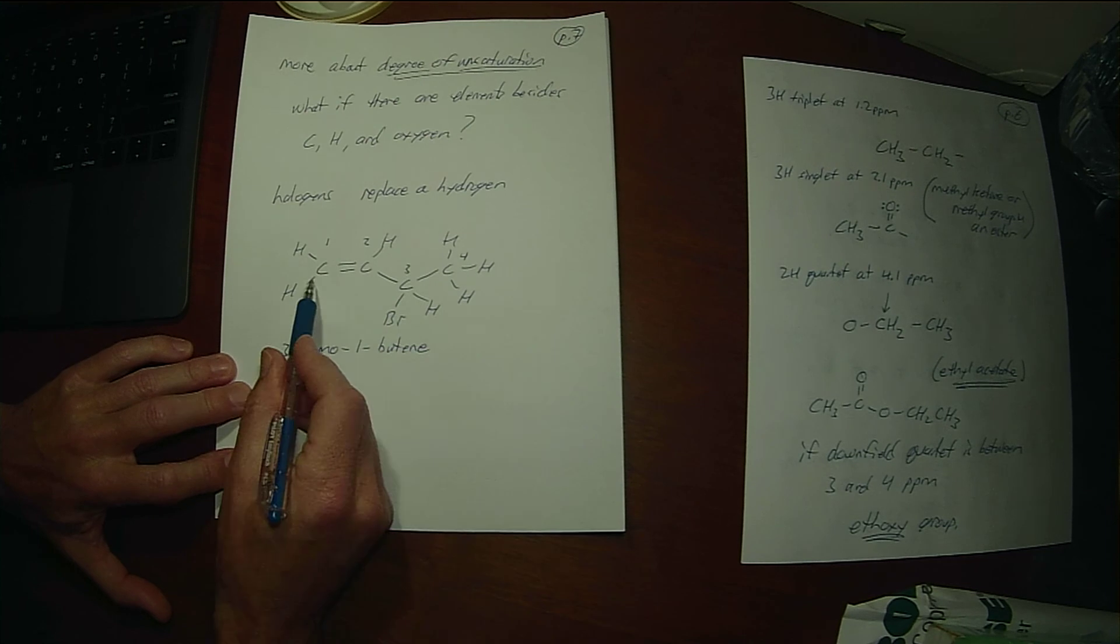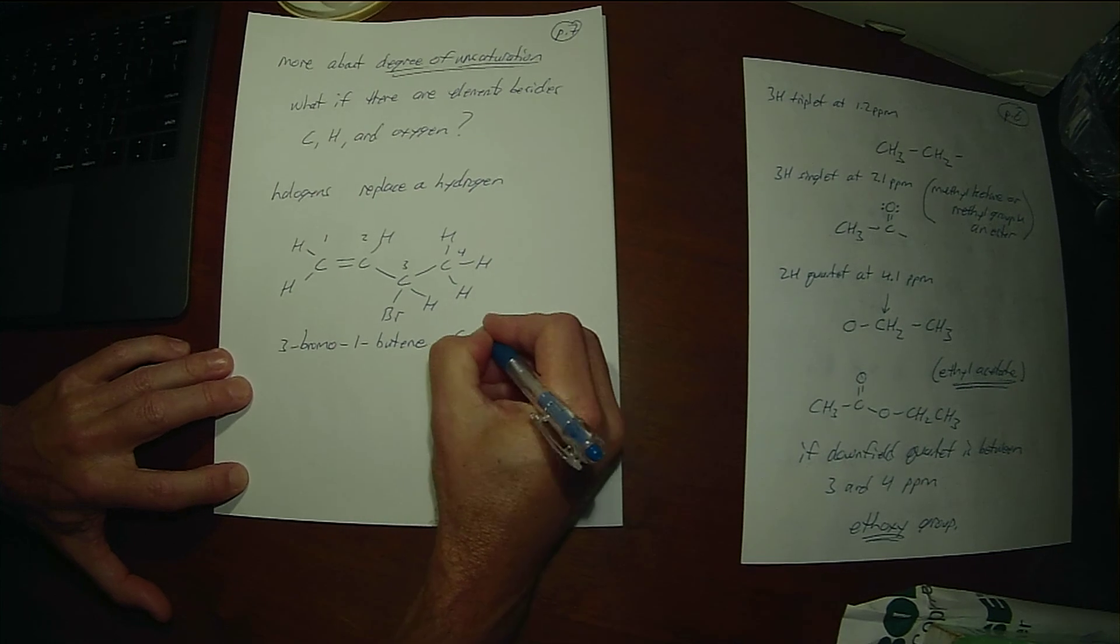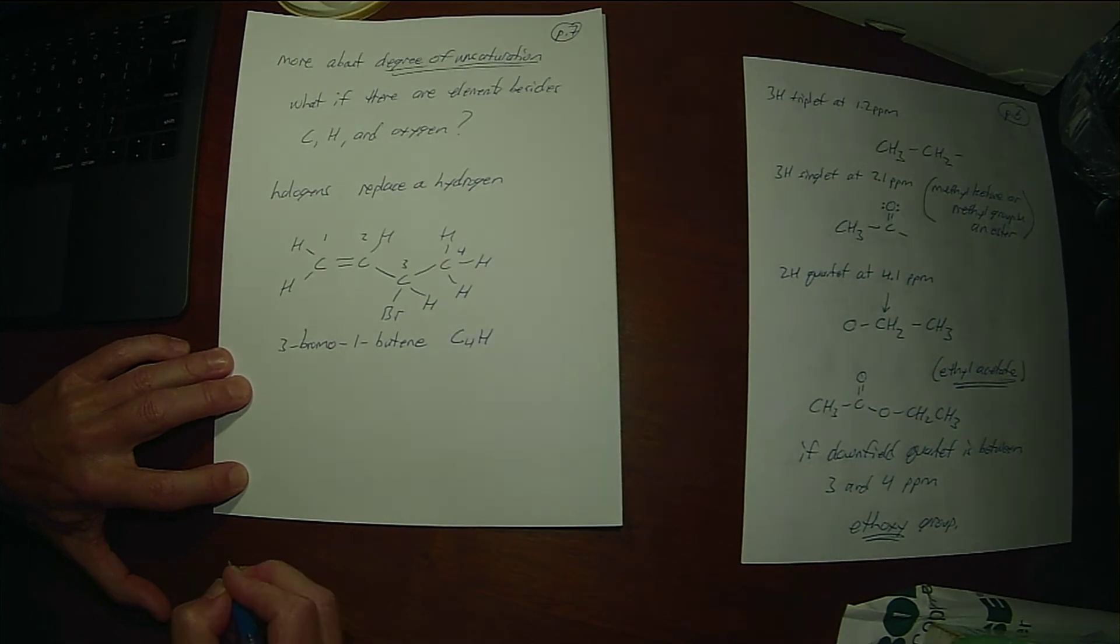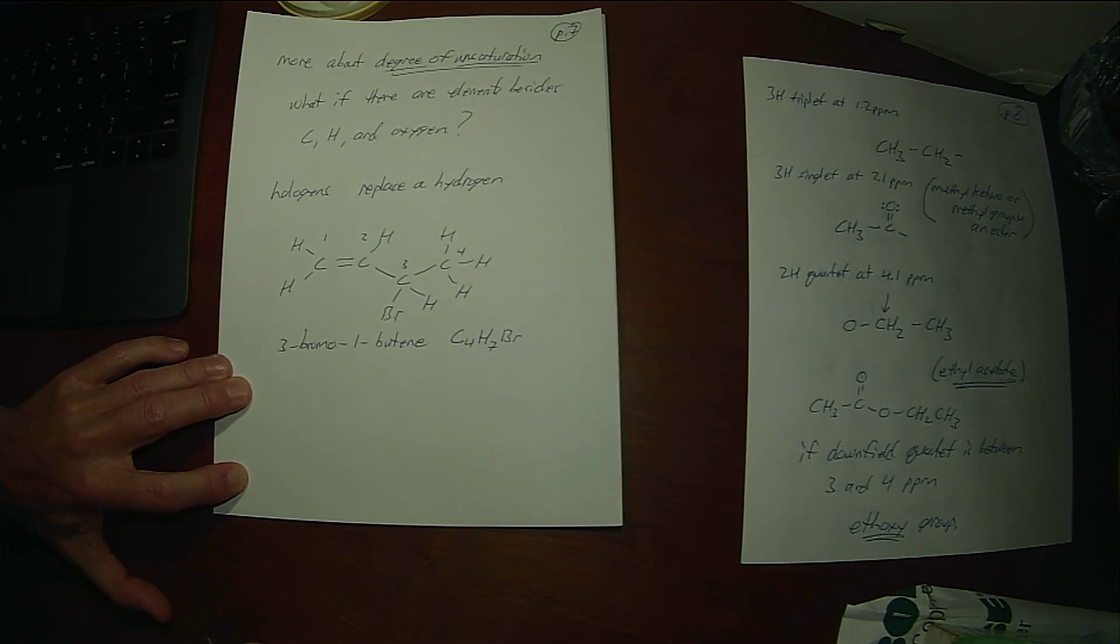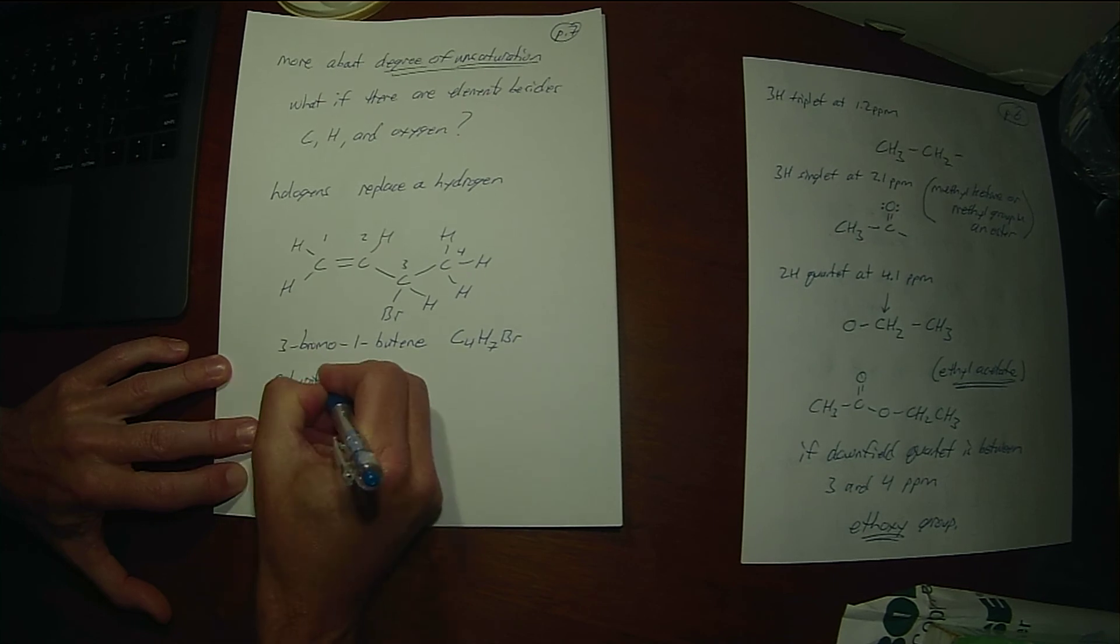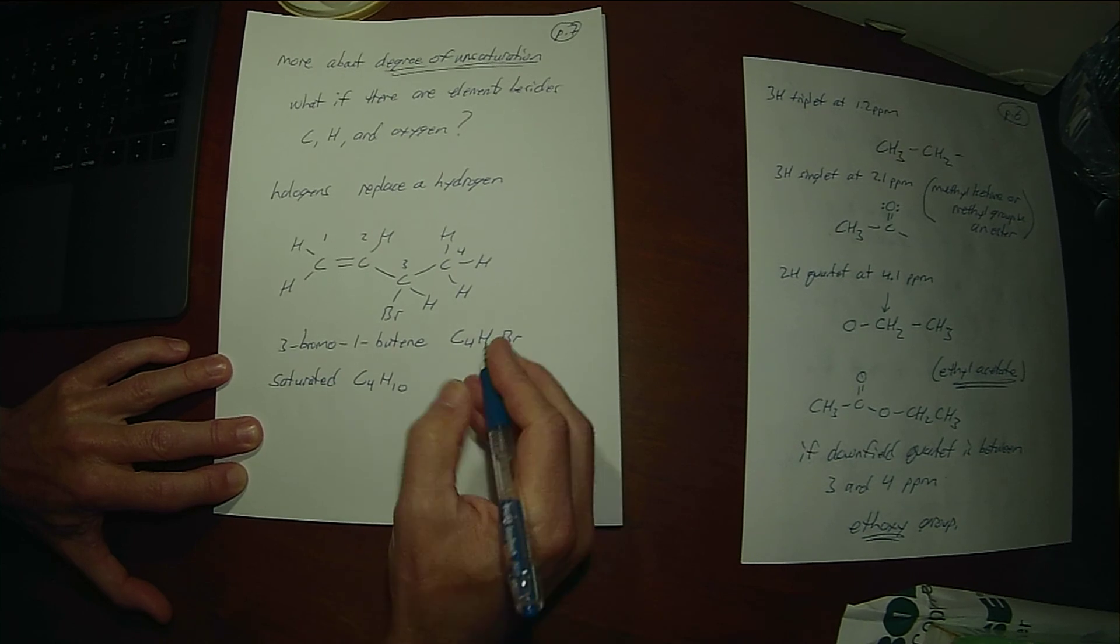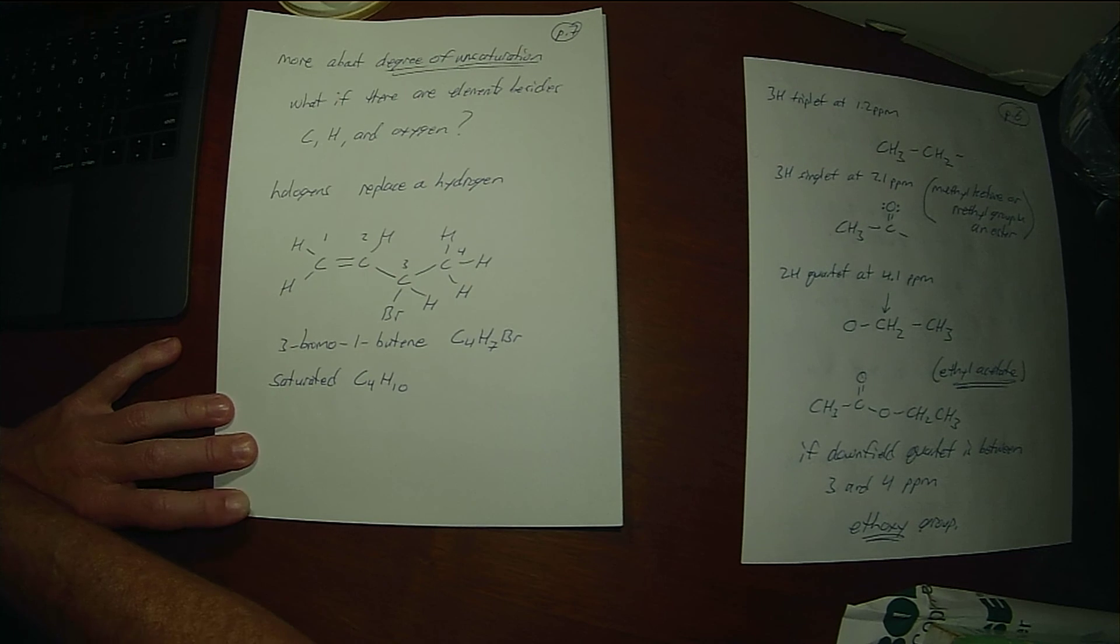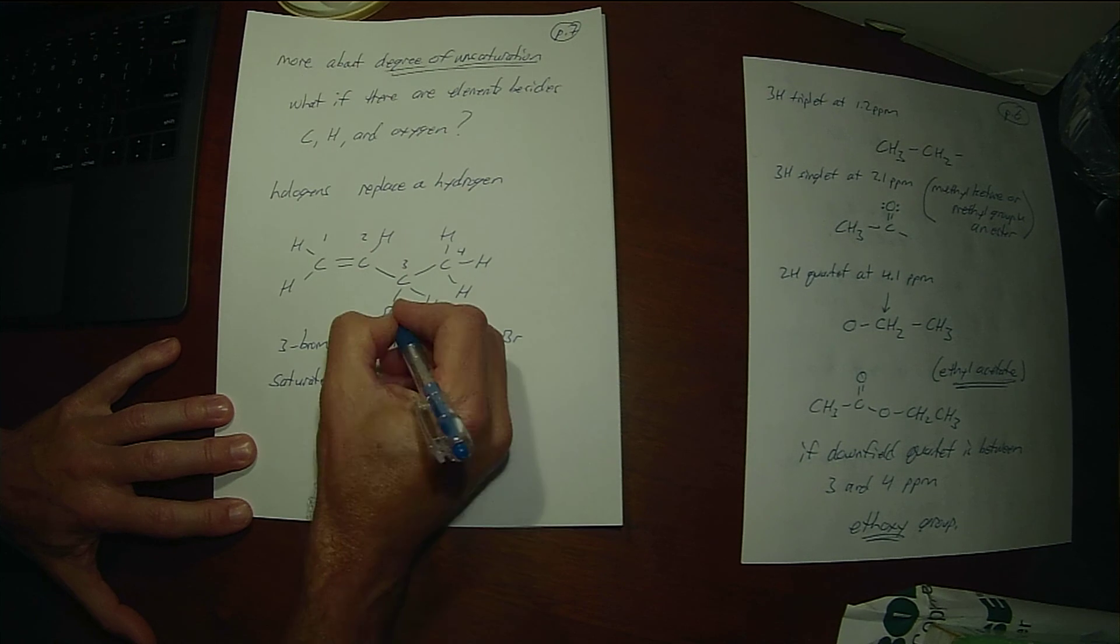So we've got to say where the alkene starts. So 3-bromo-1-butene has the formula C4H7Br, right? Saturated, C4 should be H10, but 10 minus 7 is not a number that divides by 2.